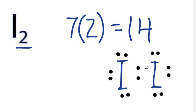We use a total of 2, 4, 6, 8, 10, 12, 14, which is how many we had to start out with. That's the Lewis structure for iodine.